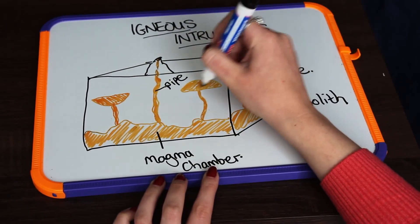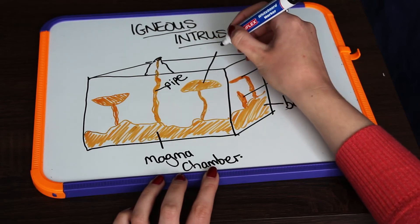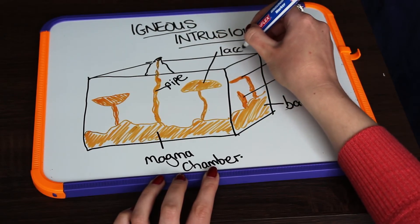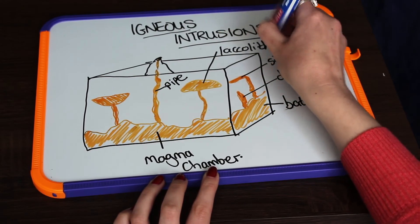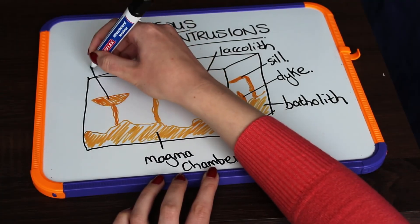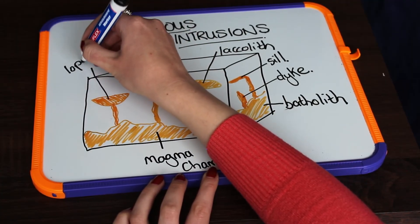And now we have these two interesting looking igneous intrusions. The one that has a dome or mushroom shape is known as a lacolith, and the other one that has more of a bowl or saucer shape is known as a lapolith.